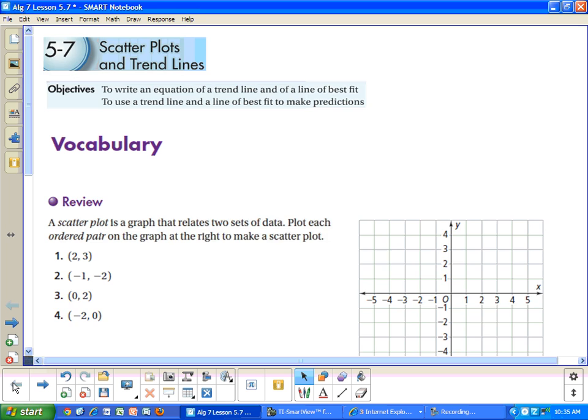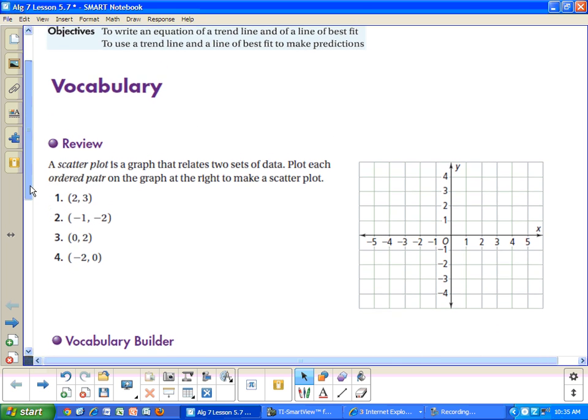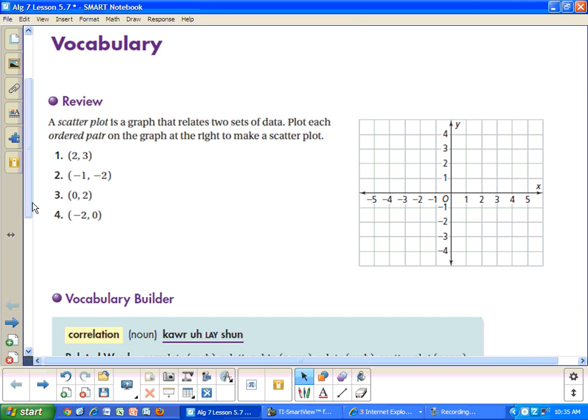So, here's our vocab. One thing you have to know is what a trend line is, what a scatter plot is. A scatter plot is a graph that relates to a set of data. If we plot each of these pairs of data on the graph, it will be a scatter plot. So, 2, 3, negative 1, negative 2, 0, 2, and negative 2, 0. If it's a scatter plot, you do not connect the dots.